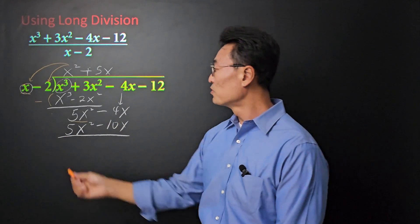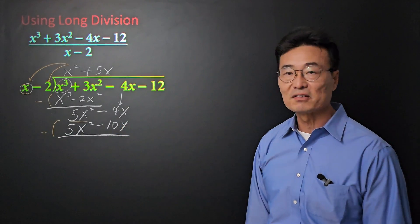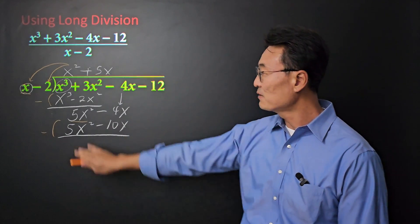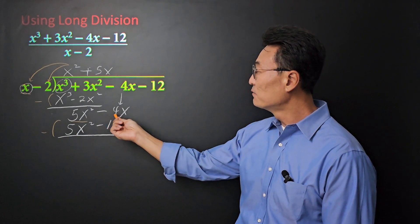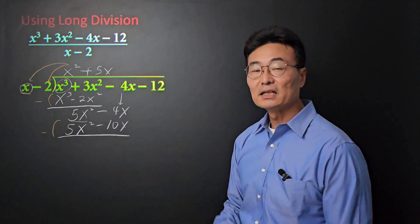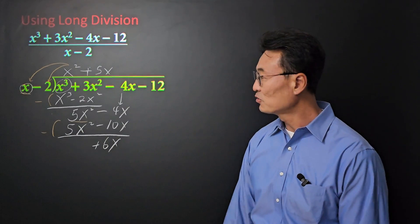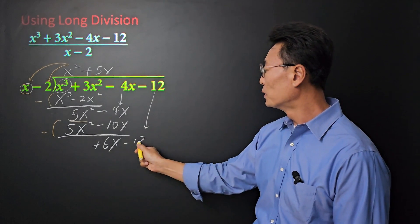Just as before, we're subtracting. We're subtracting the 5x squared minus 10x from the 5x squared minus 4x. 5x squared minus 5x squared, gone. Next, negative 4 minus a negative 10 will be a positive 6x. Be careful with the signs. And then we're going to bring down the negative 12.